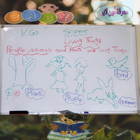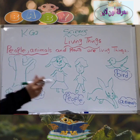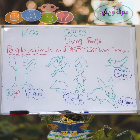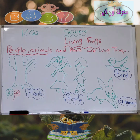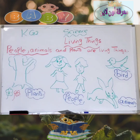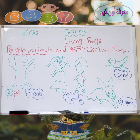Let's think. What are other animals that are considered as living things? We have cats, dogs, cows, horses. All are animals, and they are living things.